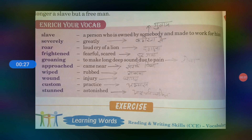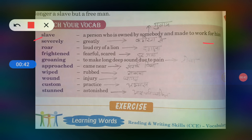First of all, see word meanings. Slave — slave means kya hota hai? A person who is owned by somebody and made to work for him.